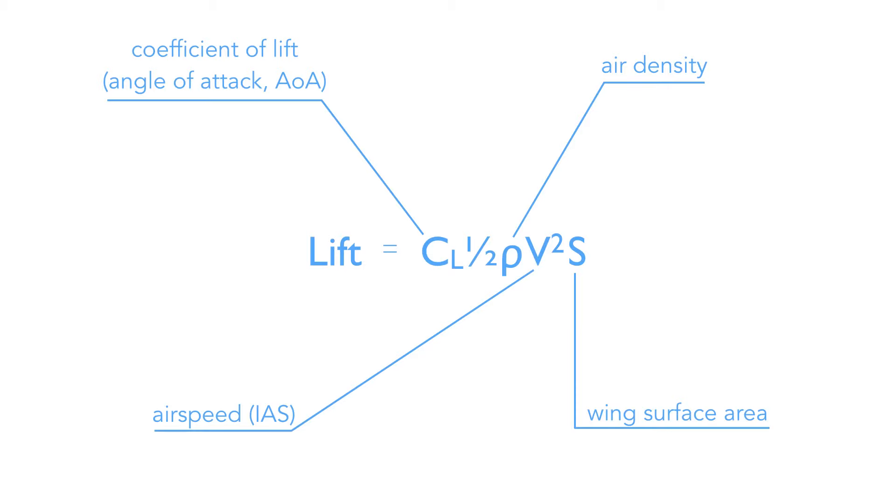Thus the angle of attack is the key component of the coefficient of lift. Rho is the air density. V is the airspeed. S is the wing surface area.